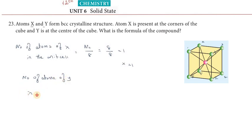Number of atoms of Y in the unit cell: Y is at the center of the cube. X is present at the corners of the cube and Y is at the center of the cube. This is body-centered, BCC crystalline. Y, one atom at the center, the formula is 1 by 1 equals 1. So Y equals 1.